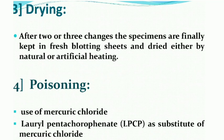Then drying. After two or three changes, the specimens are finally kept in fresh blotting sheets and dried either by natural or artificial heating. Once we keep them for pressing, we have to change those newspapers after two to three days or once a week. Because once the paper absorbs some amount of moisture, after saturation it will not absorb further moisture. So when the sheet is saturated, we must remove the old paper and add new paper to absorb the next amount of moisture from the plant.